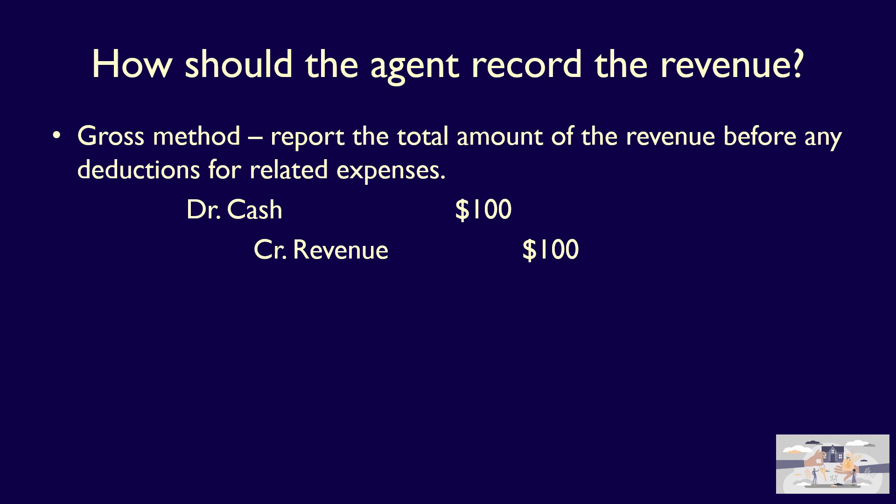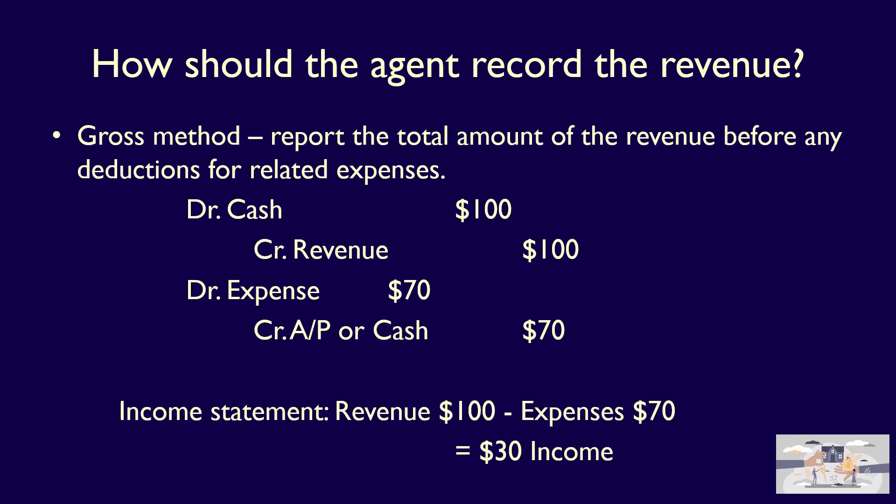The $100 is the amount they receive from the buyer of the auction item. At the same time, they would record the expenses separately: a debit to expense of $70. This debit is because the cost to MaxSold of earning the revenue is the $70 they have to remit to the seller. The credit is to accounts payable or cash — accounts payable if they still have to give the money to the seller, or cash if they've already paid the seller. On the income statement, they would record revenue of $100, expenses of $70, with income of $30, which is their fee.